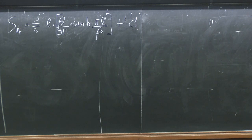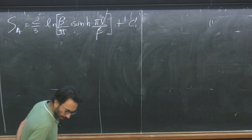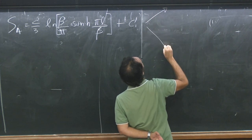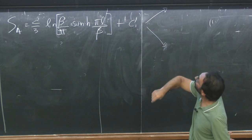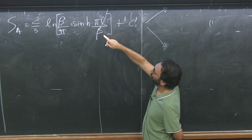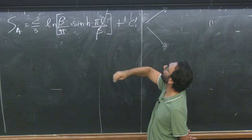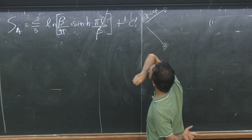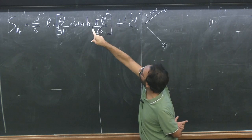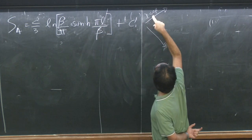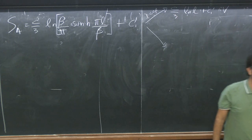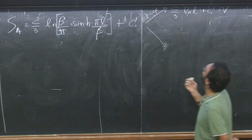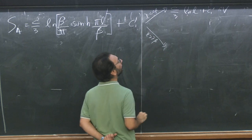This is a very simple formula. I can take two limits. First, it's a function of L/β — the ratio is what matters. If the temperature is low (β large) or if L is much smaller than β, you can expand the hyperbolic sine to first order and you get back c/3 × log(L) plus a constant, which is what we just calculated.